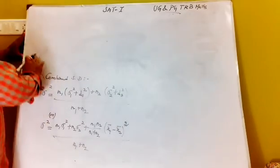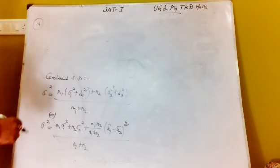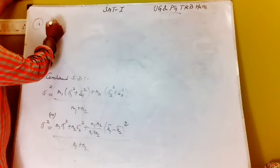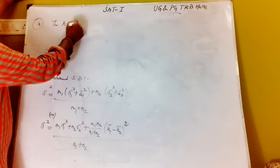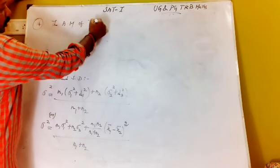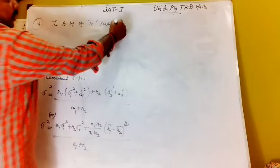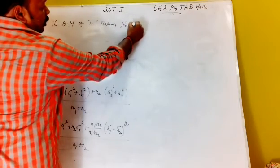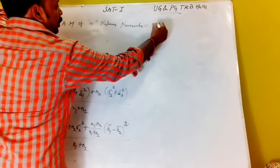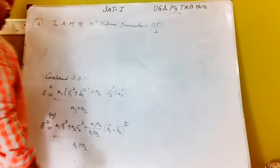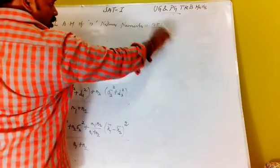Formula 14 is very simple: arithmetic mean of n natural numbers. In natural numbers, the arithmetic mean of n natural numbers equals (n plus 1) by 2. This is an important formula — arithmetic mean of n natural numbers equals (n+1)/2.